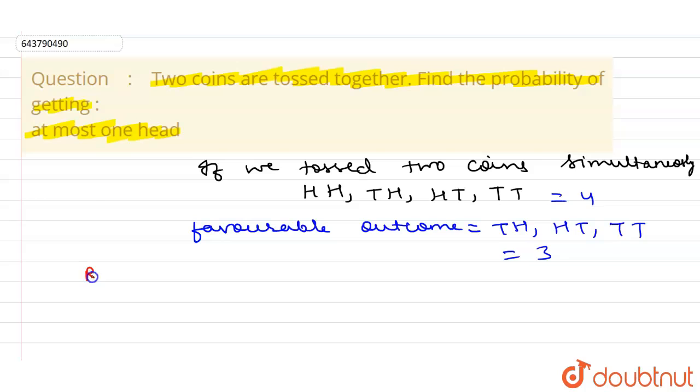From here, I can say required probability. So required probability equals the number of favorable outcomes upon the total number of outcomes.